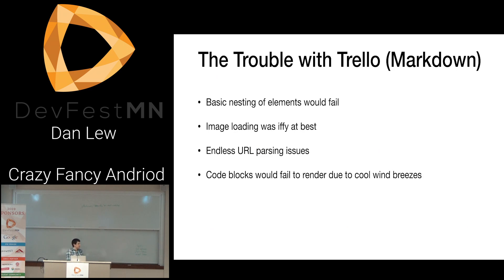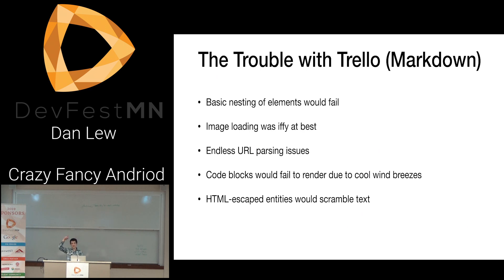Code blocks, which is a big thing people use in Trello, would fall over due to cool breezes. If you entered a new line, sometimes it would fail to render. If you started with a hash mark, it would fail to render a code block — not like there's a whole bunch of scripting languages that start with a hash mark. If you had HTML escaped entities like ampersand-AMP-semicolon, all the text in the paragraph would go to different places randomly. And one of the best ones: there was some specific piece of Russian text that would crash the app. There was a card, and if you tried to open it in the Android app, it would just crash.